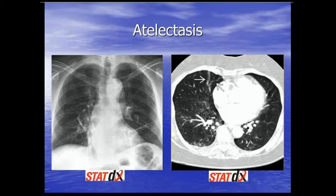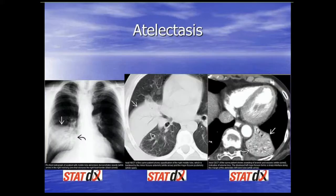This is a nice case of atelectasis, which we see all the time. This is sub-segmental or plate-like atelectasis. These more difficult cases of atelectasis can look like pneumonia — significant opacity with air bronchograms that looks like a consolidation.